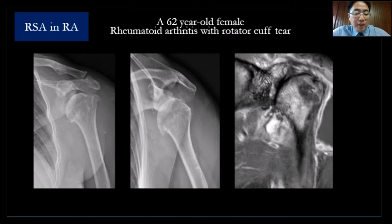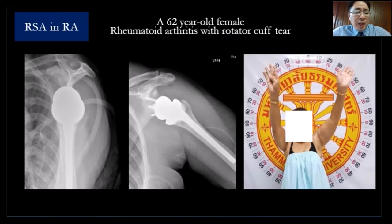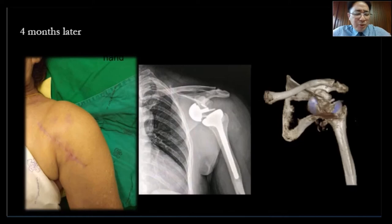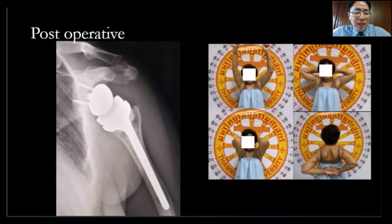In rheumatoid arthritis, be very careful because it often affects younger patients and the bone is soft. Like this patient — she had rheumatoid arthritis. Four months after I did reverse for her, she had a motorcycle accident. There was fracture of the glenoid and a broken screw. I revised, put bone graft from the iliac crest, and fixed her again. She's happy, but she's active and rides a motorcycle every day.